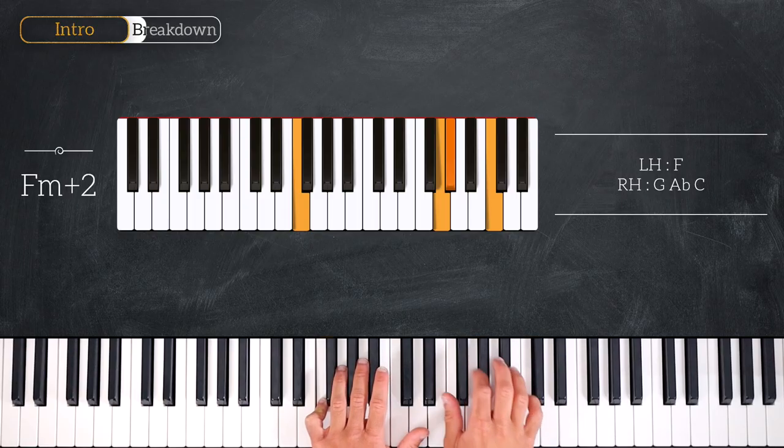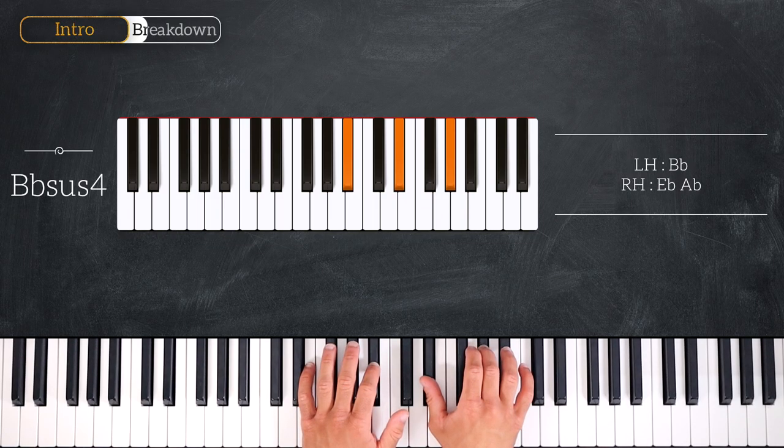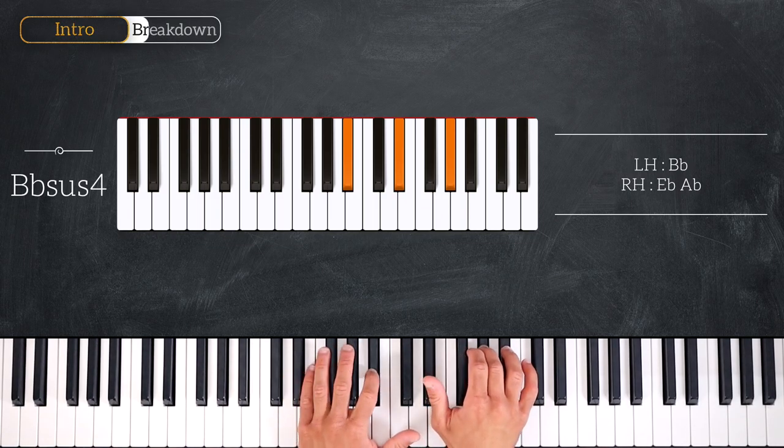Right after we'll play this Bb sus4. So here as you can see we just play fourths. So we have Bb, Eb and Ab.